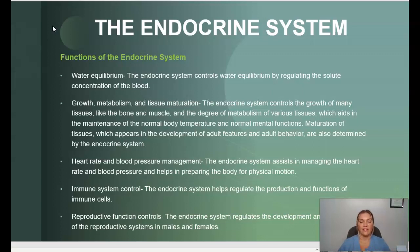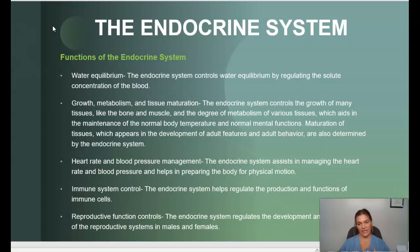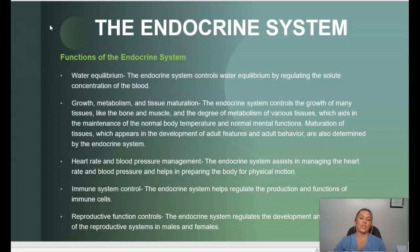We also have heart rate and blood pressure management. The endocrine system is very important in assisting and managing heart rate and blood pressure, and helps in preparing the body for physical motion. The endocrine system is also responsible for immune system control, by helping to regulate the production and functions of immune cells. And it also controls reproductive function, regulating the development and function of the reproductive systems in both males and females.